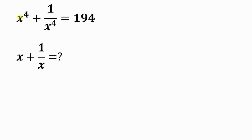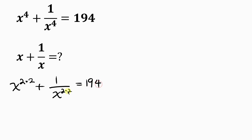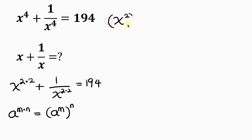We're going to start by simplifying. We note that x to the power 4 is the same as x to the power 2 times 2, and the same applies to 1 over x to the power 4. Applying the law of indices — a to the power of m times n is the same as a to the power of m, all raised to the power of n — we can write this as x squared raised to the power of 2 plus 1 over x squared, all raised to the power of 2, equal to 194.